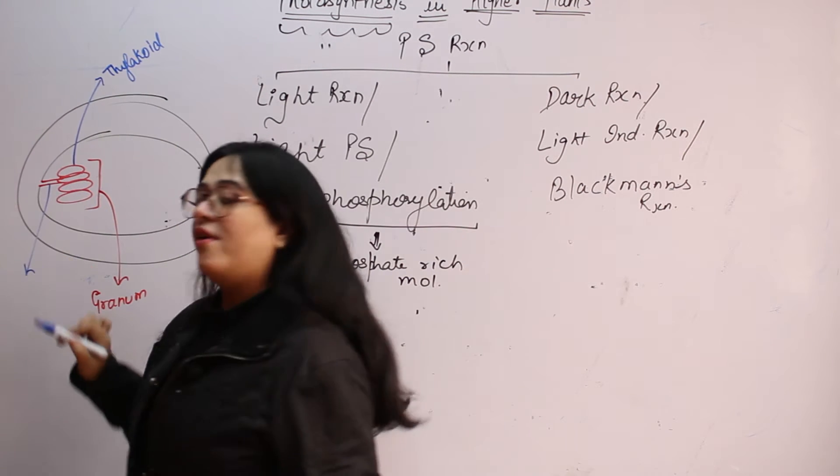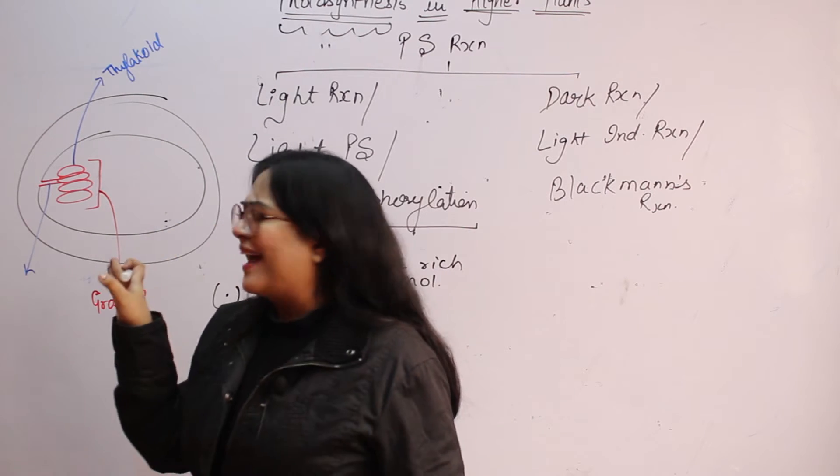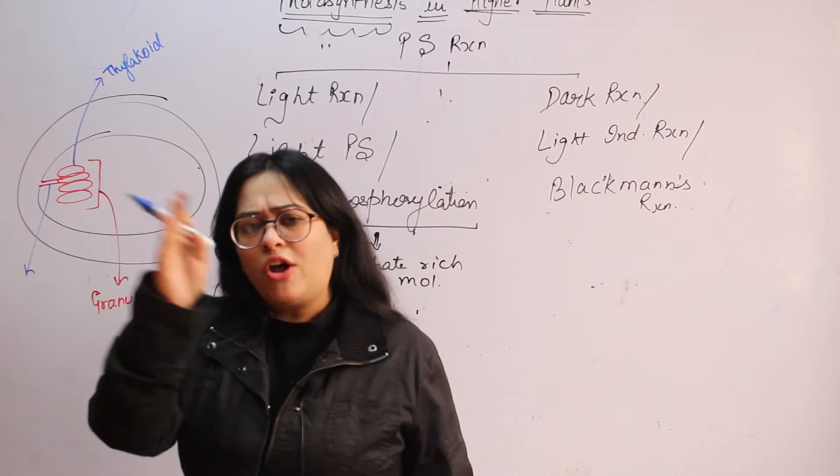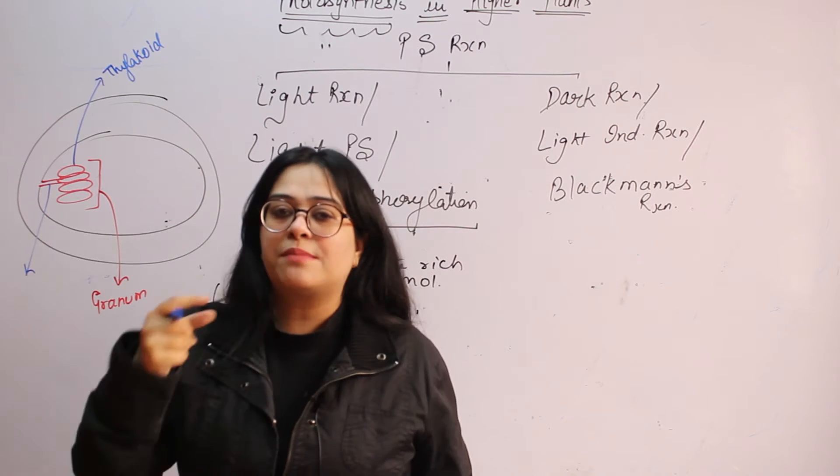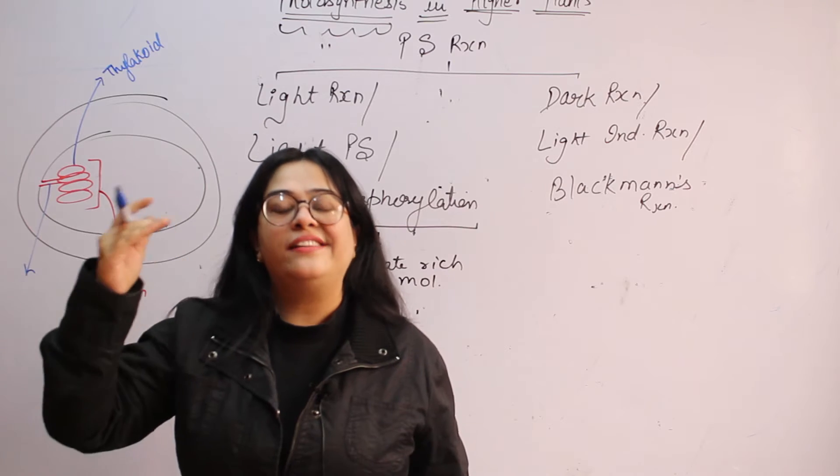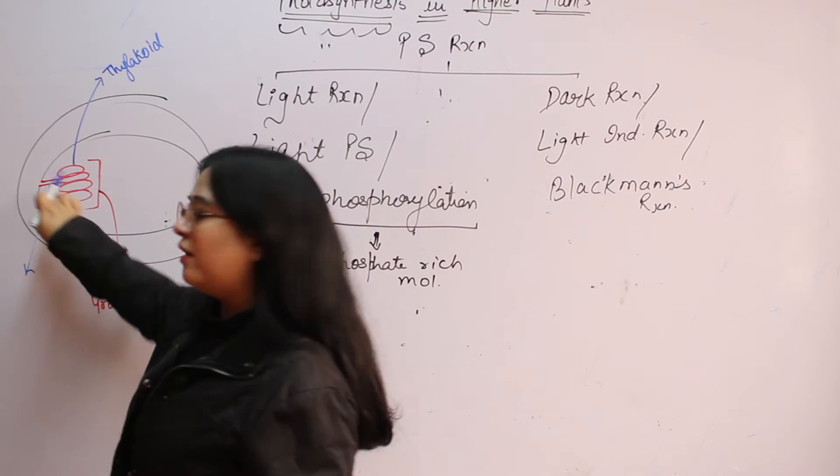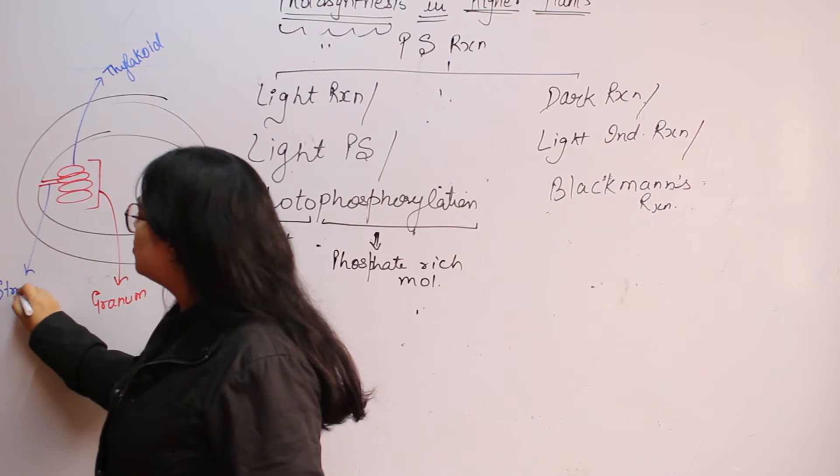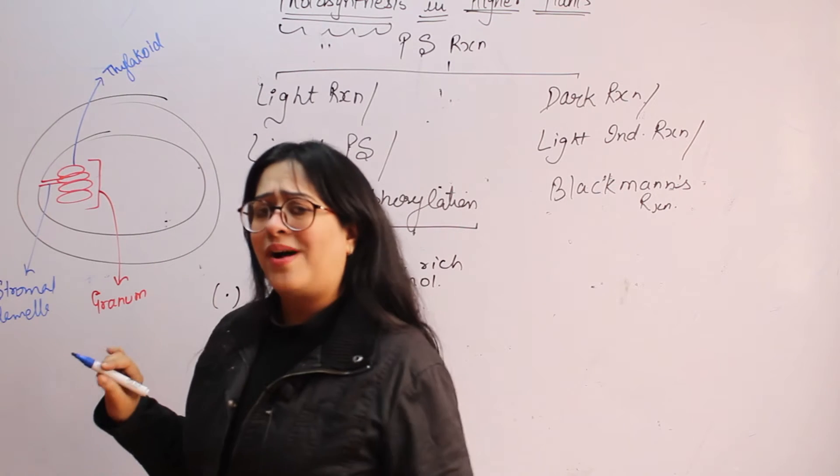This inward folding, where this folding started, so thylakoid or granum or this inward folding, these are membranous structures only. And we know the composition of membrane. There is a bilayer of phospholipids and a few proteins, proteins which are intracellular as well as extracellular. So this inward folding, where it started, this is stromal lamella. Why the word stroma?